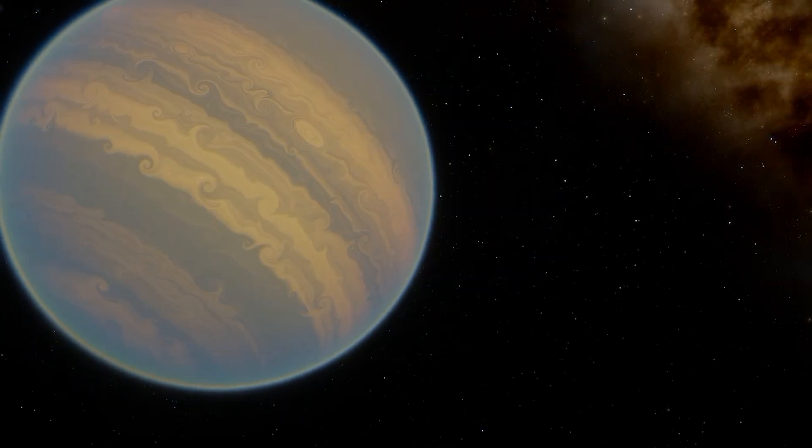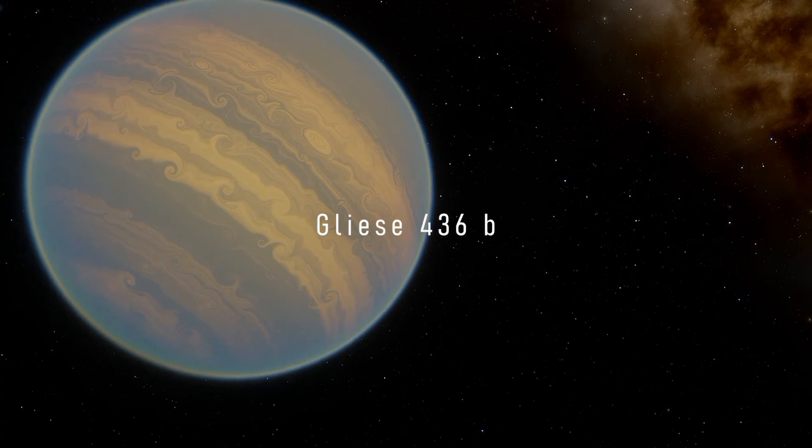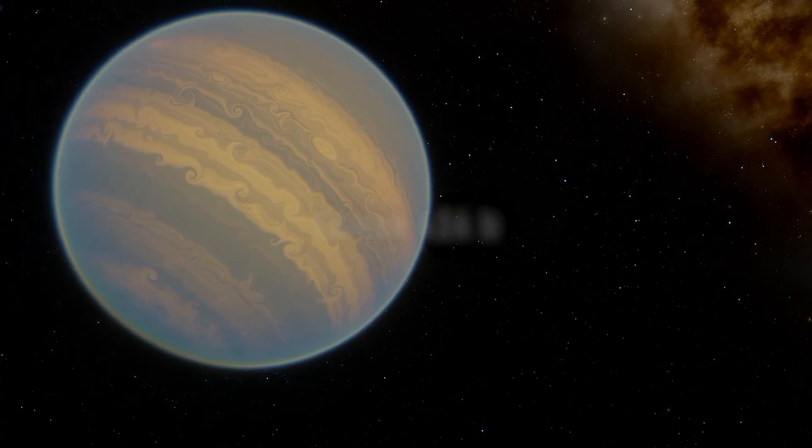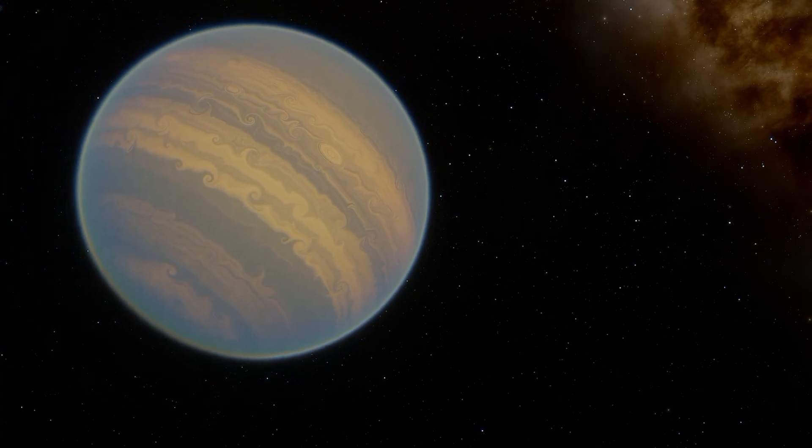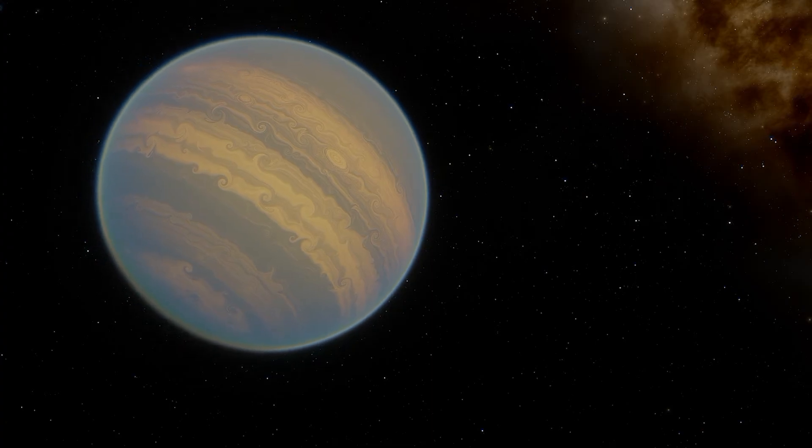Such a signature can be found in the exoplanet Gliese 436 b, which has a predominance of carbon monoxide and is hypothesized to be a possible helium planet.